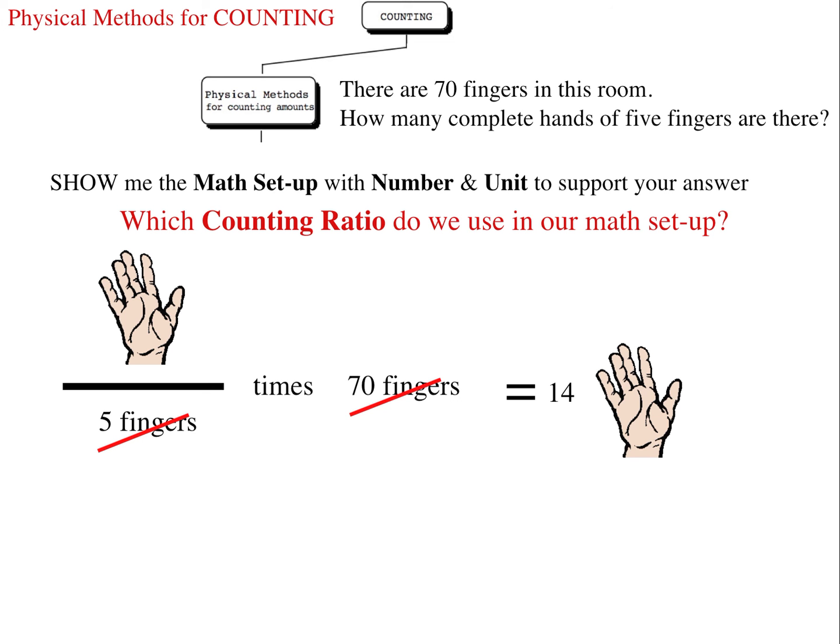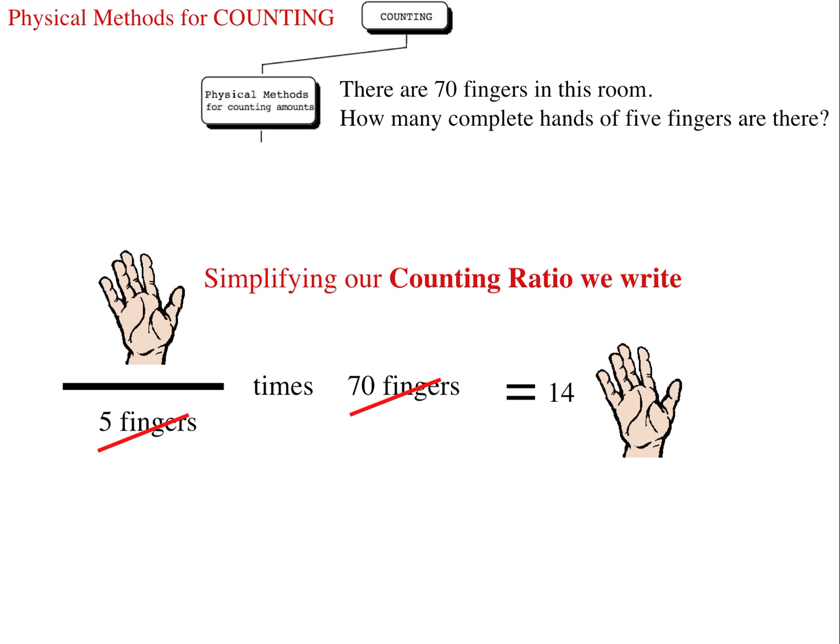And certainly raise your hand if you don't understand. And a good mantra is to raise your hand if you don't understand. And we can simplify our counting ratio by writing the following: one hand per five fingers times 70 fingers equals 14 hands, removing the hand pictogram.